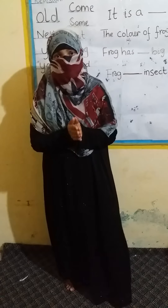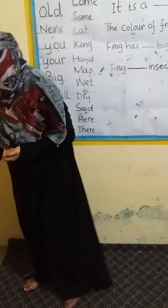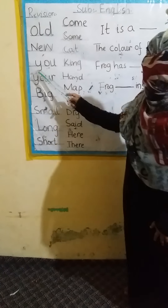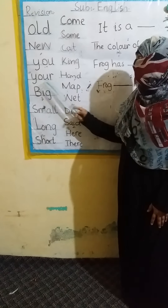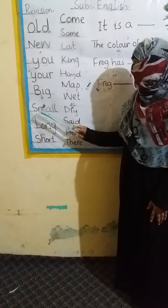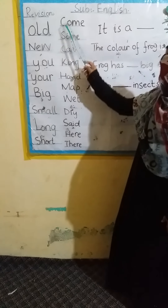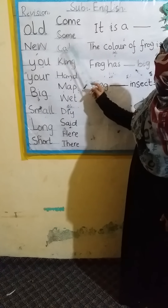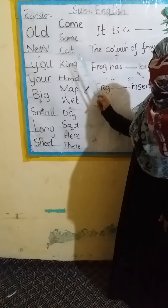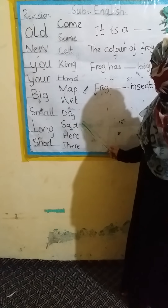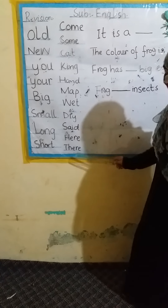Okay, now we will revise. Let's revise: Alt, New, U, Y, Big, Small, Long, Short, Come, Some, Cat, King, Ant, Map, Wet, Dry, Sad, Here, There.